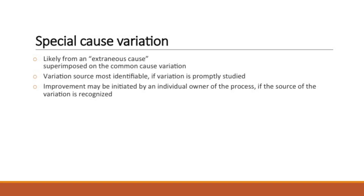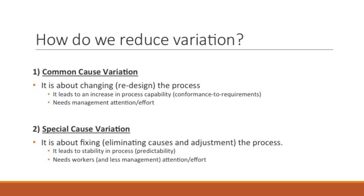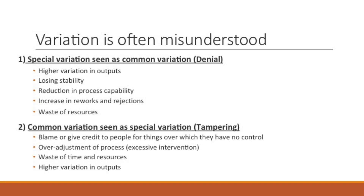If you're able to recognize the source of the variation, you'll be able to think about improvements to the process. The whole purpose in understanding variation and causes of variation is so that you can reduce variation in a process over time. For common cause variation, it's about changing or redesigning the process — your goal is to lead to an increase in process capability. Special cause variation is about fixing or eliminating causes, which will also lead to stability in the process. Variation is often misunderstood: special cause variation is seen as common cause variation, and common cause variation is seen as special cause variation, which leads to tampering of the system.